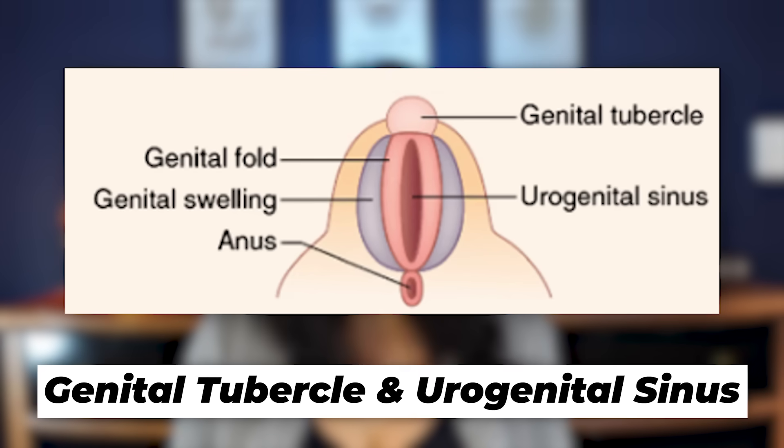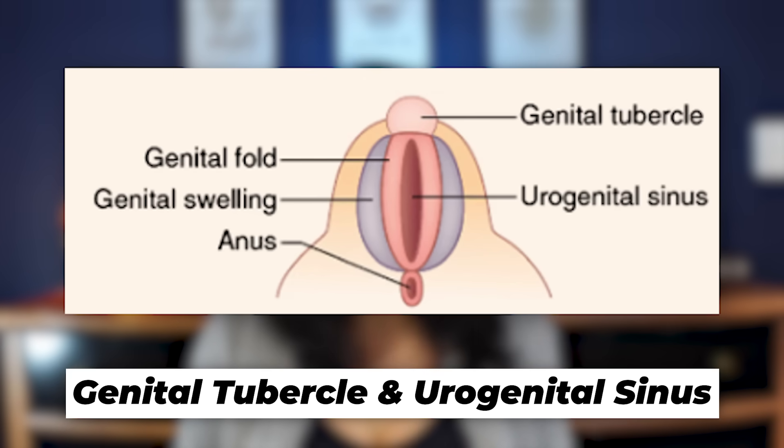To understand the specifics of anatomy, it's important to understand how we develop. For simplicity in this video, I'm going to refer to anybody with a penis as male and anybody with a vulva as female. When a fetus is developing in the uterus, during the first eight weeks we don't have any genitals. The fetus has two distinct structures that will eventually develop into either female or male anatomy: a genital tubercle and a urogenital sinus.